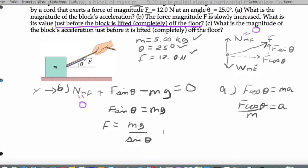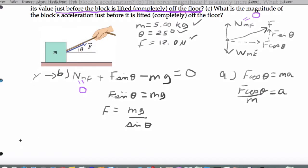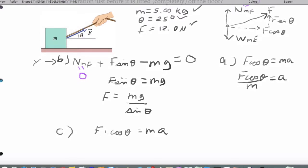And what this does is it changes part C when I want to get the acceleration. I still use the equation F times the cosine of theta equals MA, but now I have a value for F that I solved for in B that I substitute into here. So I'm going to end up getting Mg over sine theta times the cosine of theta equals MA.